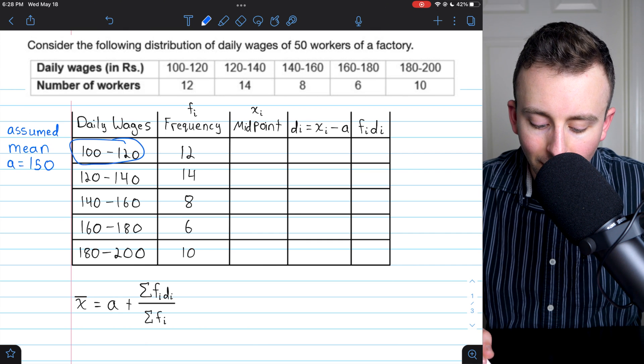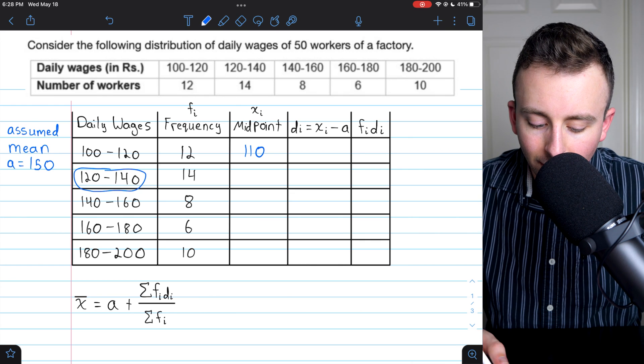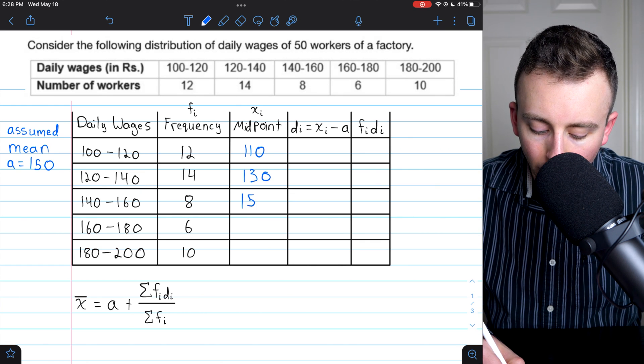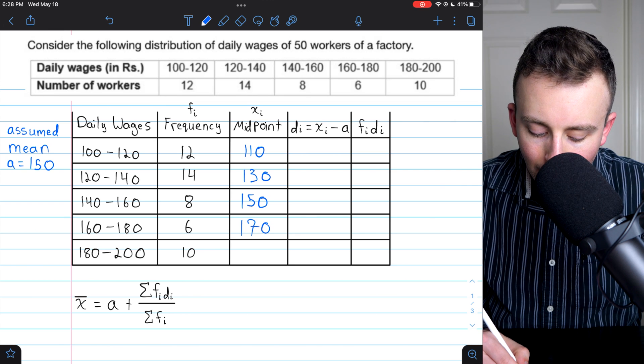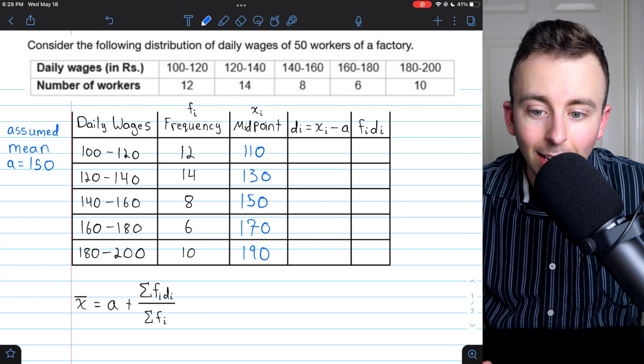The midpoint of this interval is 110. The midpoint of this interval is 130, and so on. 150, 170, and finally, 190. So those are the xi's. Those are the midpoints.